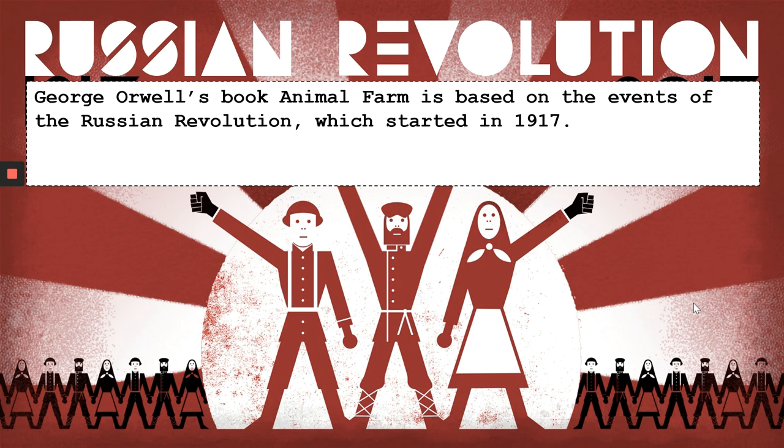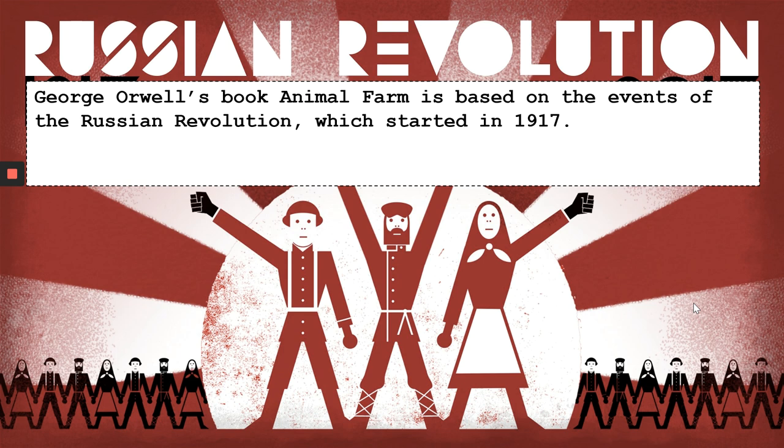George Orwell's book Animal Farm is based on the events of the Russian Revolution, which started in 1917. Therefore, to understand Animal Farm, we need to know a little bit about the historical context of the Russian Revolution. I'm going to talk you through exactly what the Russian Revolution was and what caused it, and at the end you're going to be asked to write down what you've learned, so you need to listen really closely.